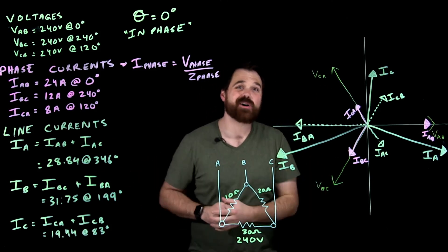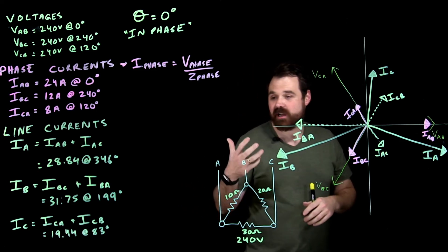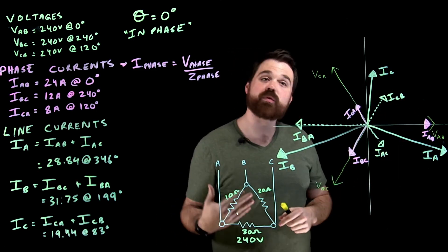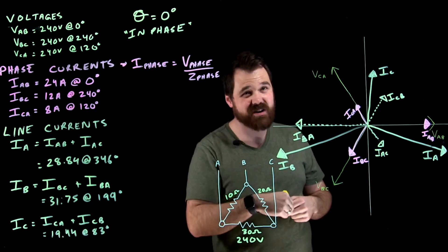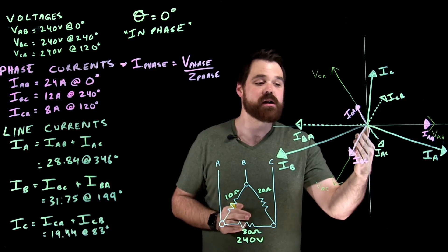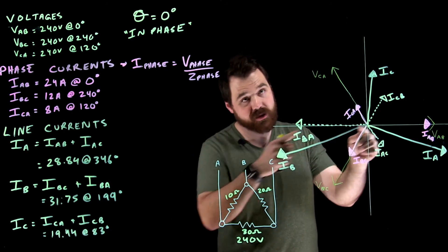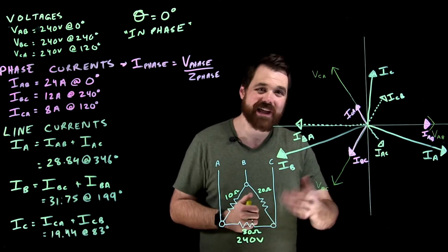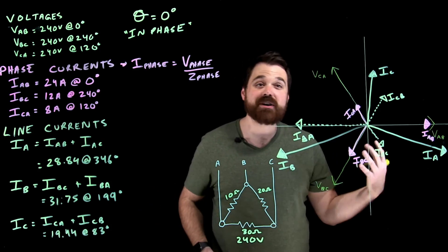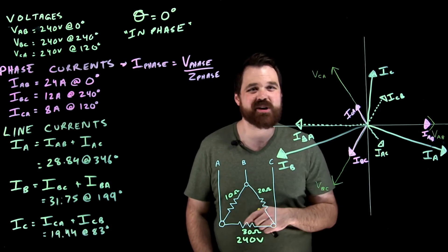I hope this helps. One key point: these line currents are NOT root-3 larger than the phase currents, and they do NOT have exactly a 30-degree lag — those relationships only hold for a balanced delta. The line currents are larger than the phase currents, but not by the root-3 factor. Thanks for watching, and have an awesome day!